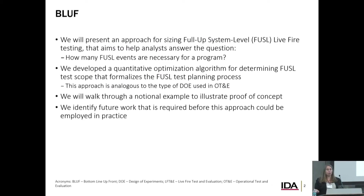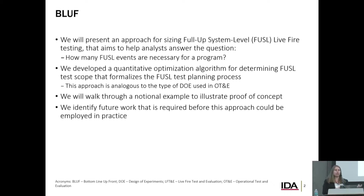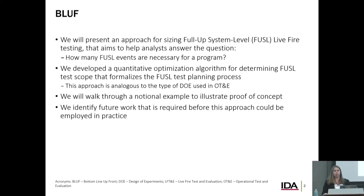I'm going to present an approach for how we determine how many feasible events are necessary for a program. We're going to do that using a quantitative optimization algorithm. This is analogous to the type of DOE that's used to plan operational test and evaluation, although it is different — we don't use a traditional power analysis. I'll walk through a notional example just to illustrate proof of concept, and then lastly I'll touch on the future work that's needed before we can really employ this in practice.